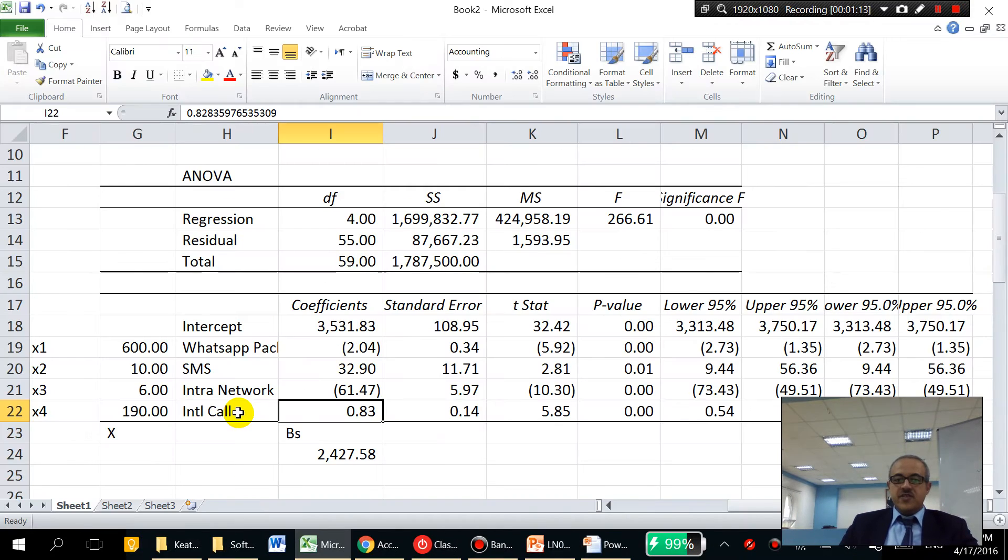If it is like here, 32. So we've got one more dollar, one more dollar here, 32 dollars will increase on the other side. Here it will be negative. One dollar more, two dollars less.